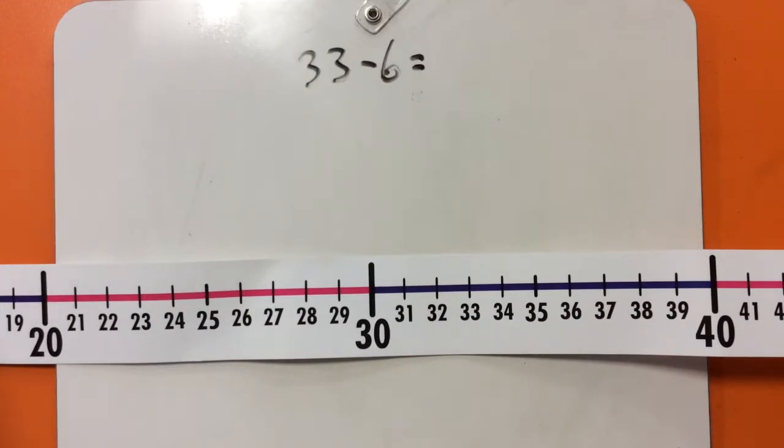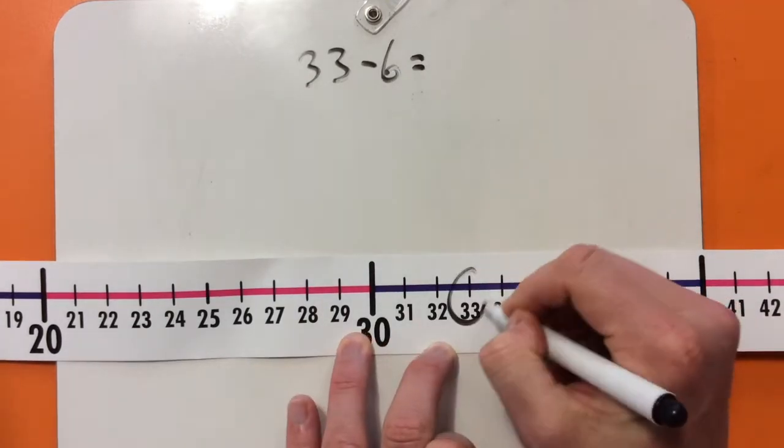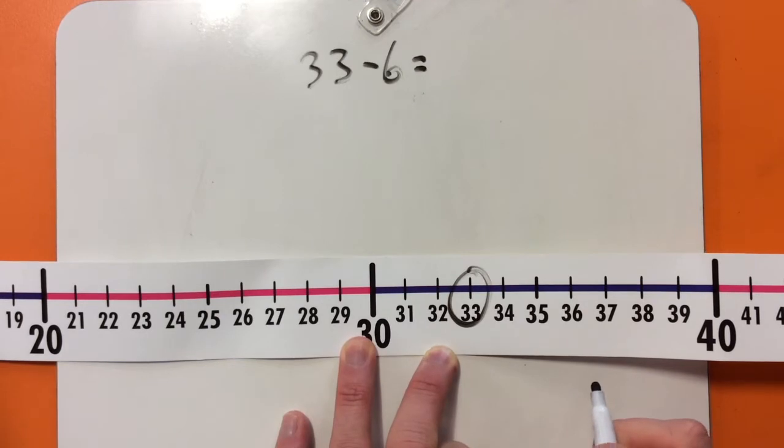For this problem, we're going to use our strategy of counting back. So, what we want to do is start at 33. I'm going to circle that, and we're going to count back 6 times.